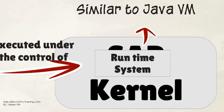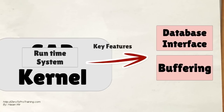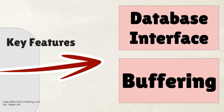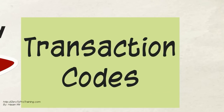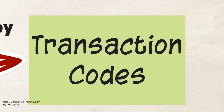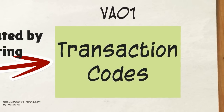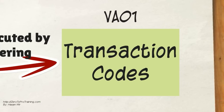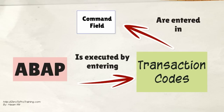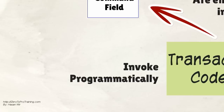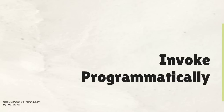In this respect, the runtime system can be seen as a virtual machine comparable with a Java VM. It provides an interface to the database and buffering of frequently used data. A transaction in SAP terminology is the execution of a program. For instance, VA01 is the transaction code for creating a sales order. Transactions can be started by entering the transaction code directly into a command field, which is present in every SAP screen.